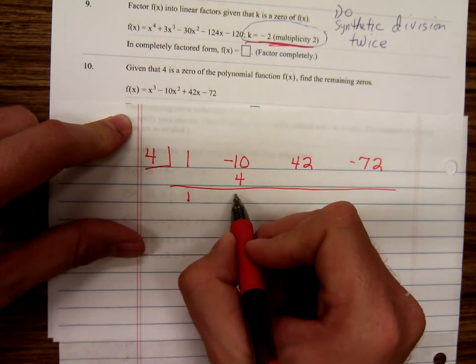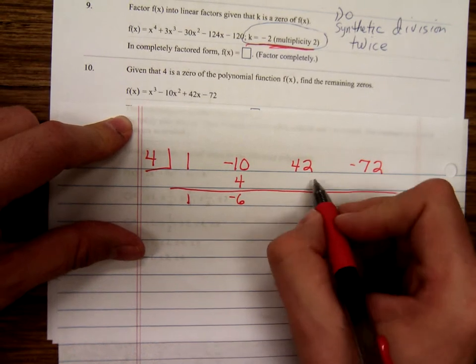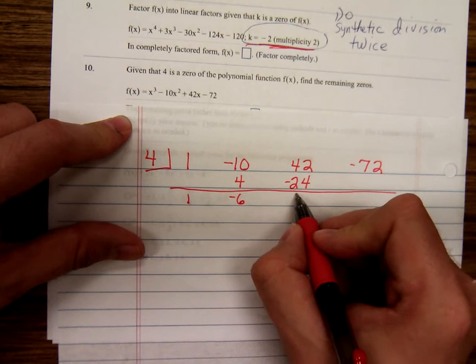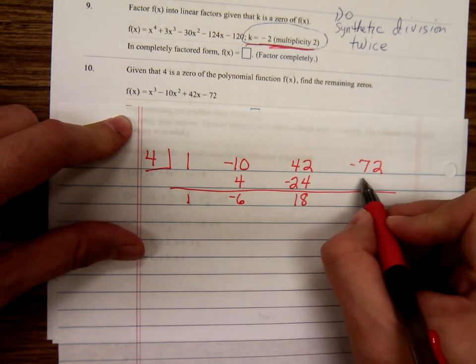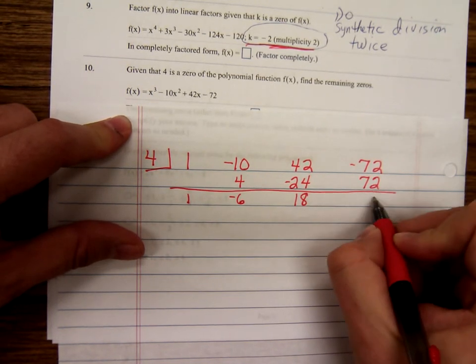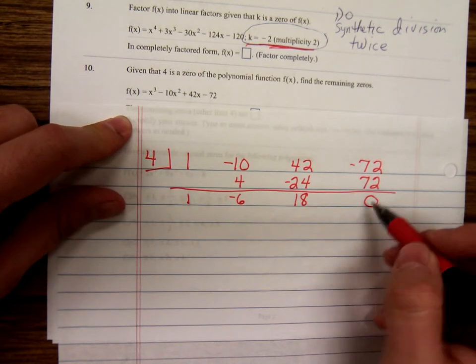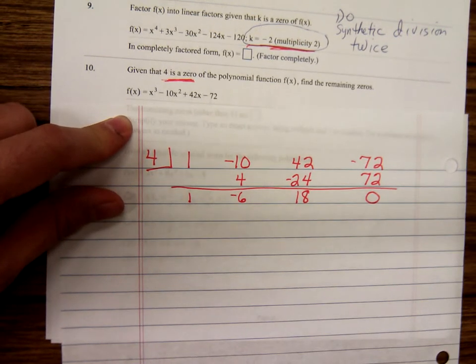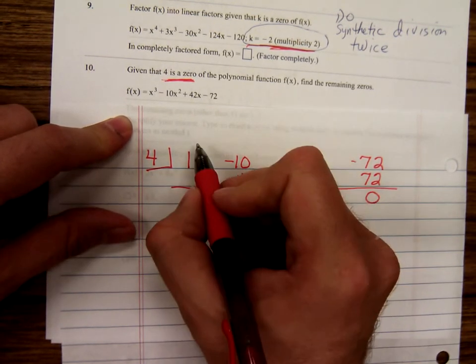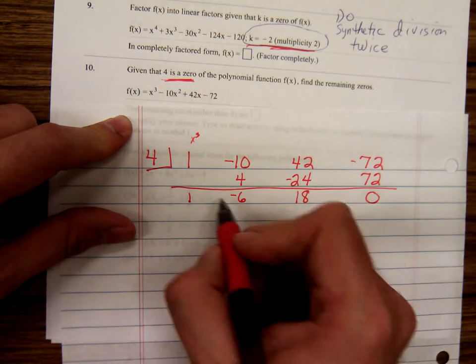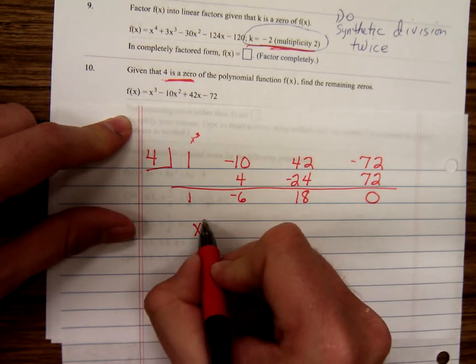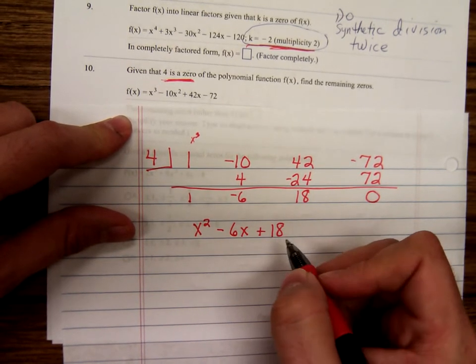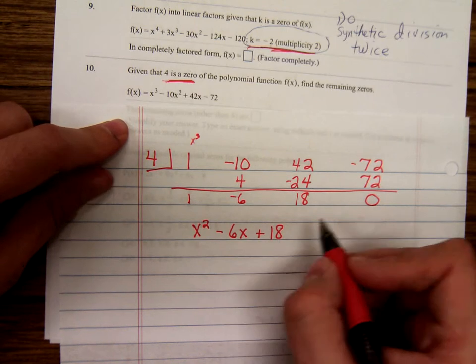Negative ten plus four is negative six. Negative six times four is negative twenty-four. Forty-two minus twenty-four is eighteen. Eighteen times four is positive seventy-two. Getting us a zero, which shouldn't be surprising, as we were told that four is a zero. So this started with an x to the third.